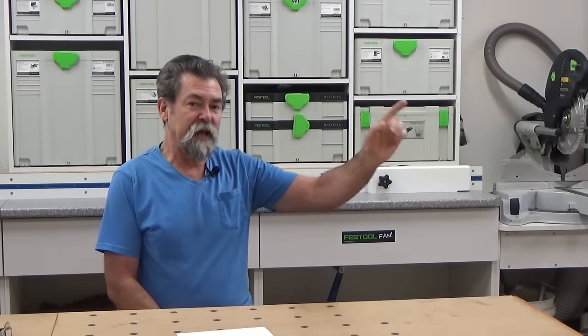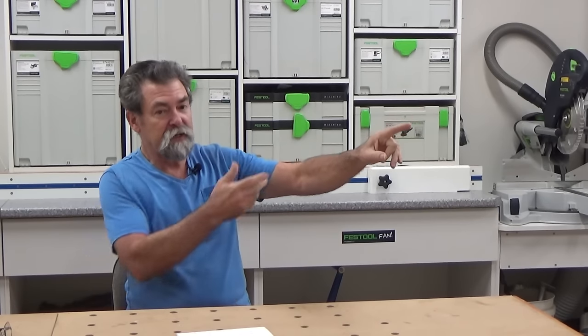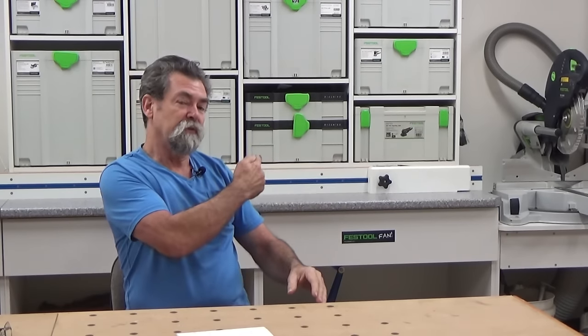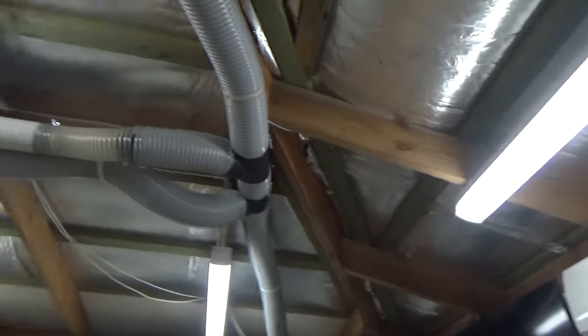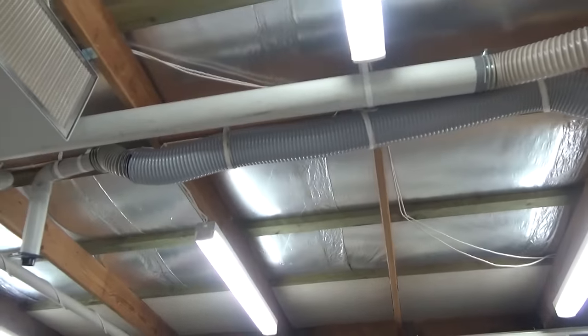What I've done is I've staggered the lights. So I'll have one very close to the wall at the far end. The next light along is over on this side of the ceiling. Then the next one is on the other side and they alternate.